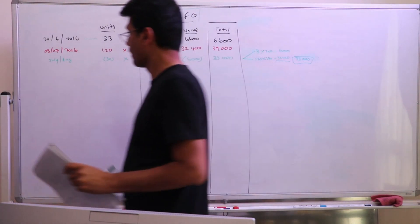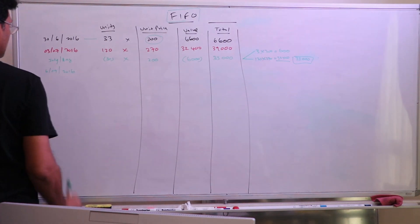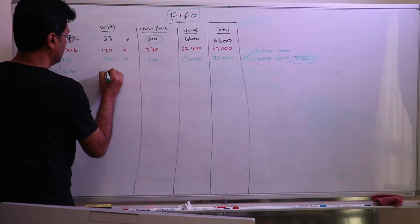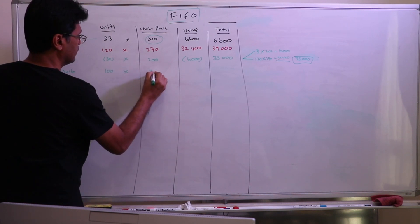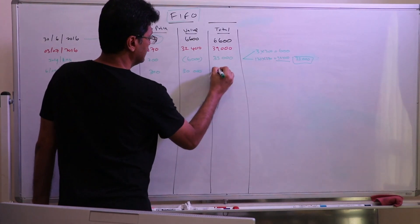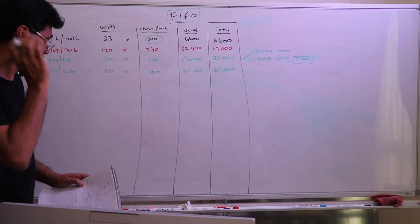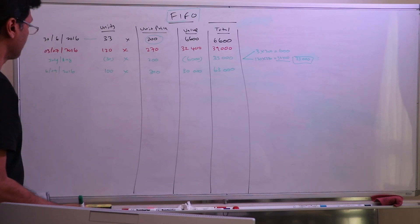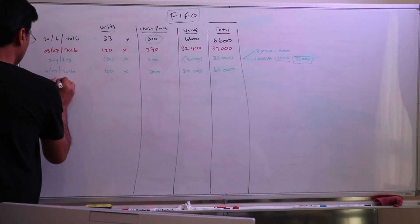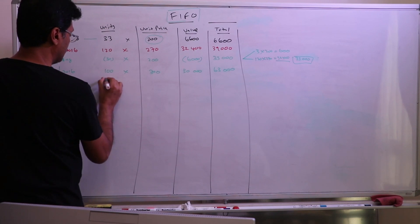Next transaction: 6th September 2016 — purchase of 100 units at the rate of $300 each. That's 100 times $300 equals $30,000. Adding to the previous balance of $33,000 gives a cumulative total of $63,000. Moving to sales: September to October, 90 units were sold.